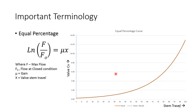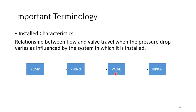The installed characteristic is different from inherent characteristic because the valve is not installed alone — there is piping on the upstream side, piping on the downstream side, and a pump which pumps the fluid through. Installed characteristic is the relation between flow and valve travel when the pressure drop varies as influenced by the system in which the valve is installed.